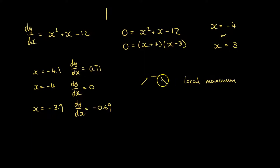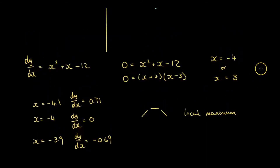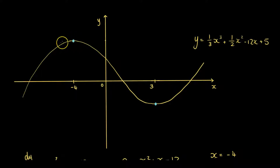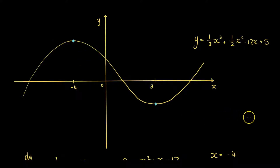...we know that minus 4 at the top is going to be a local maximum, because the points either side are going to have smaller values than at the point x equals minus 4. Going back to our proper graph, you can see the shape here: x equals minus 4 is at the top, with a positive gradient on the left and a negative gradient on the right. This is what a local maximum looks like.